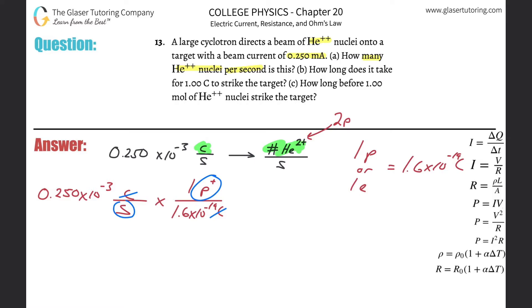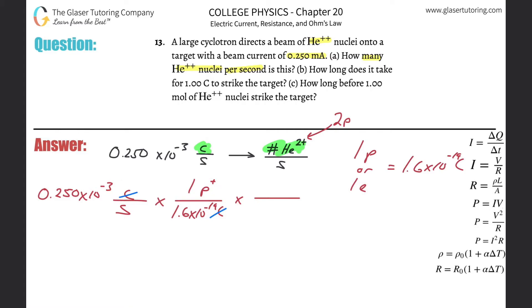But a helium nucleus that has two positive charges is essentially the same thing in terms of charge as two protons — it has a net plus two charge. So the helium nucleus has essentially two protons per helium. I need to get out of the unit of protons per second and into the unit of number of helium nuclei per second. We know that the charge of one helium nucleus is equivalent to two protons. So the proton value goes in the denominator and the helium nuclei go on top.